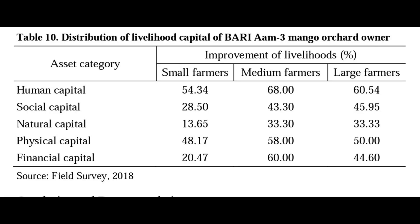This slide shows the distribution of livelihood capital among Bariyam 3 mango orchard owners, reflecting improvements in their living standards. For large farmers, human capital improved by 60 percent, social capital by 45 percent, natural capital by 33 percent, physical capital by about 50 percent, and financial capital improved by about 44 percent in their livelihood.